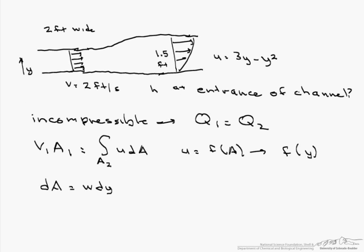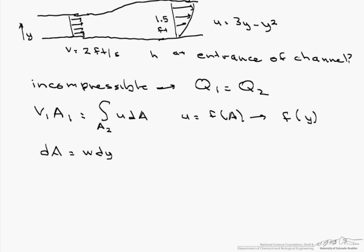And now let's replace this with our Q1 equals Q2. So we have v1 times w times this height that we are trying to find equals w...